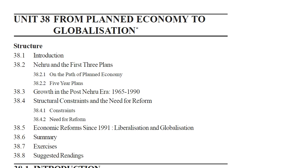In the early decades of planning, national income, the agricultural sector, and industry began to grow. After the Nehruvian era, the Indian economy faced a variety of difficulties — especially during the 1960s — including slow growth in agriculture, inflation, war, and refugees. Successive governments introduced new reforms and policies, including the Green Revolution and economic reforms, which finally led to globalization.